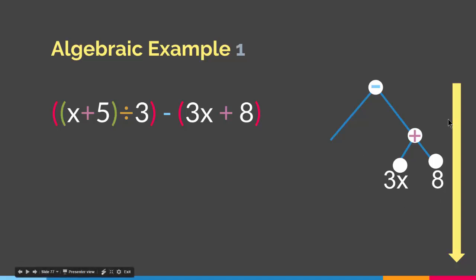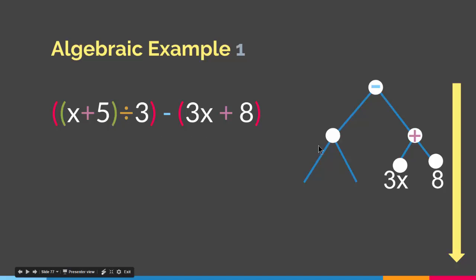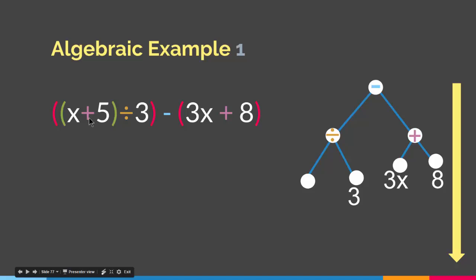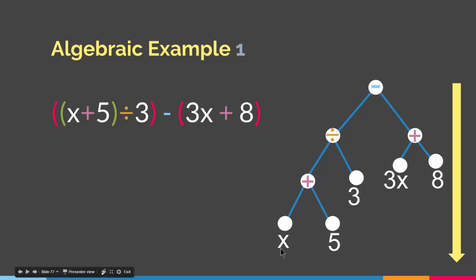Now let's do the left subtree. We have x plus 5 the whole thing divided by 3, so we need two subtrees connected by a division node. The right subtree contains 3, and the left sub-subtree will contain x plus 5. We put the division node here, with 3 on the right leaf. On the left side we still have an operator — this plus — so we create two more leaves: the right one contains 5 and the left one contains x.